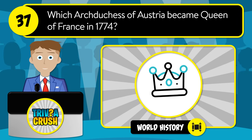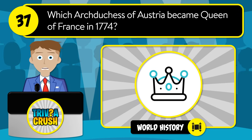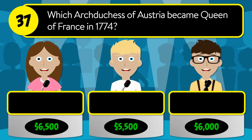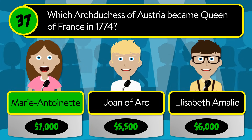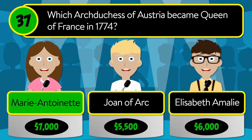Question number thirty-seven: which Archduchess of Austria became Queen of France in 1774? Was it Marie Antoinette, Joan of Arc, or Elizabeth Emily? The correct answer is Marie Antoinette.